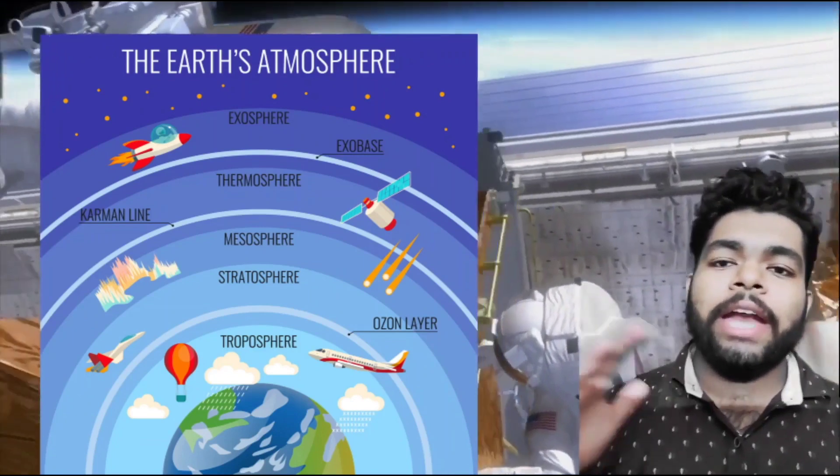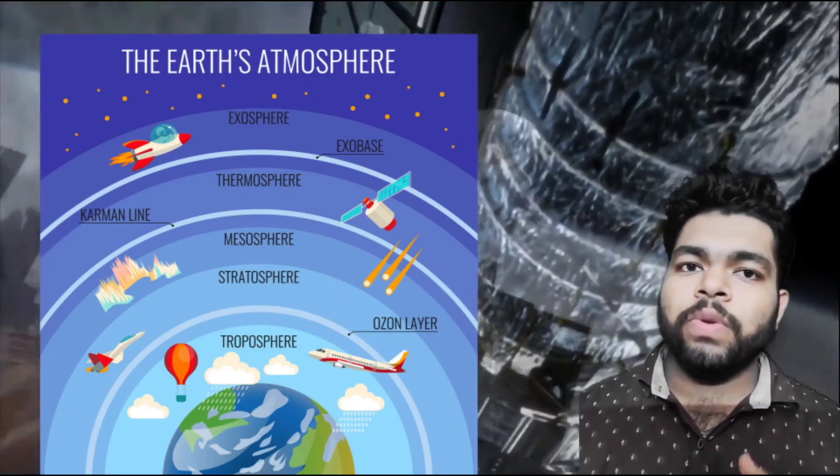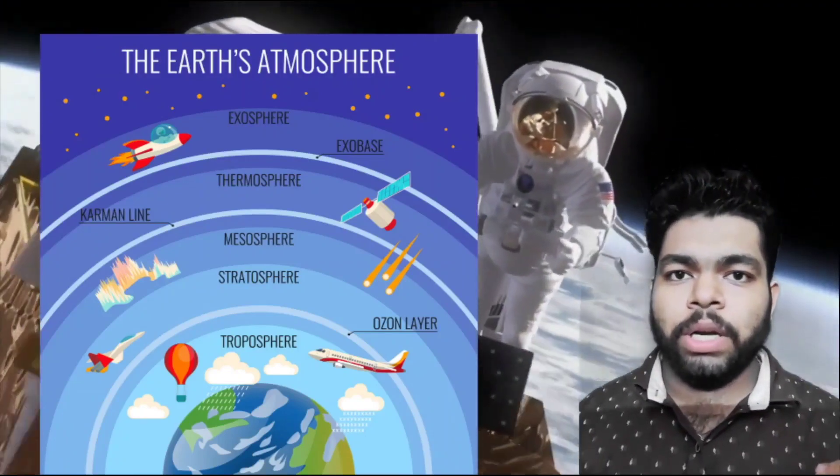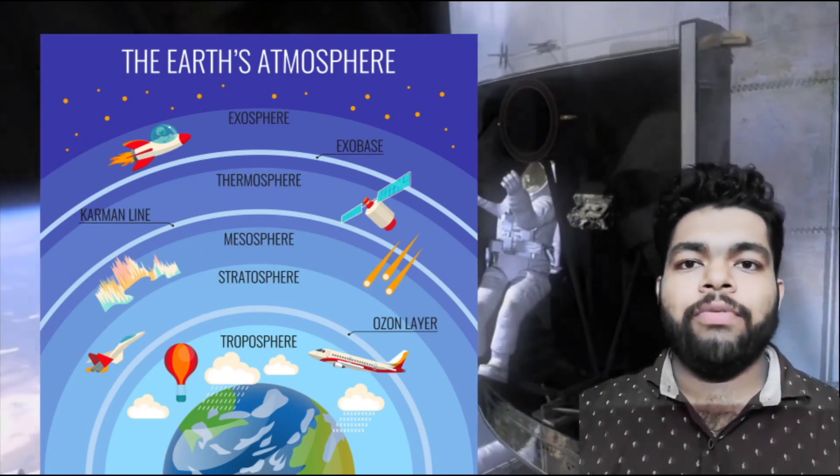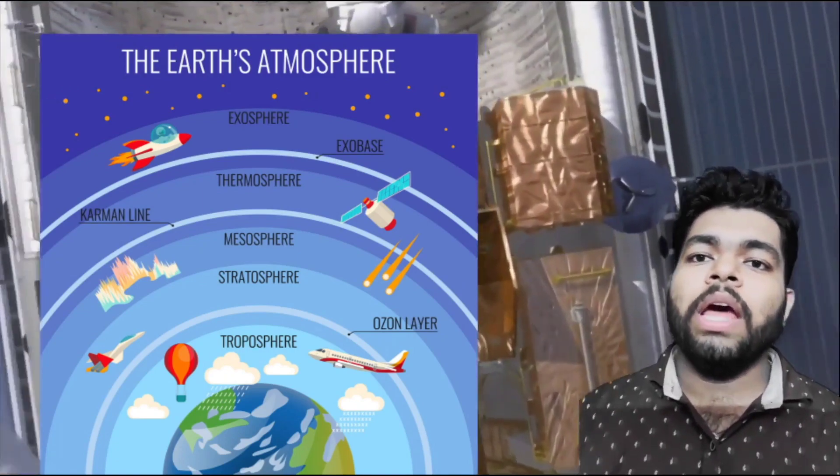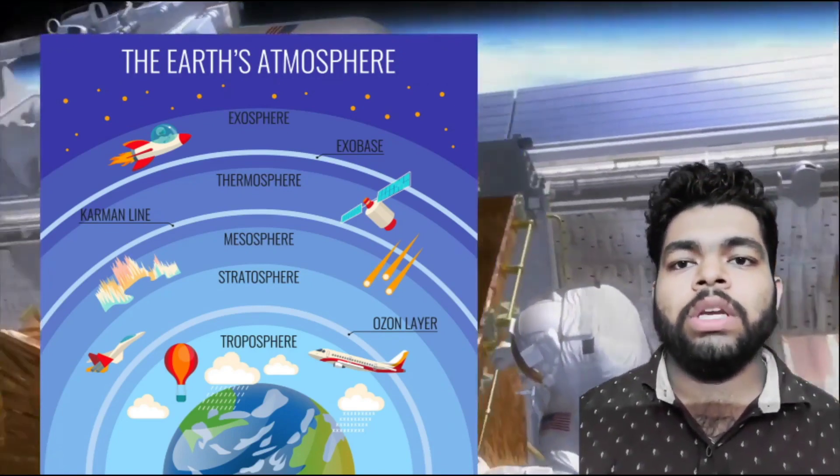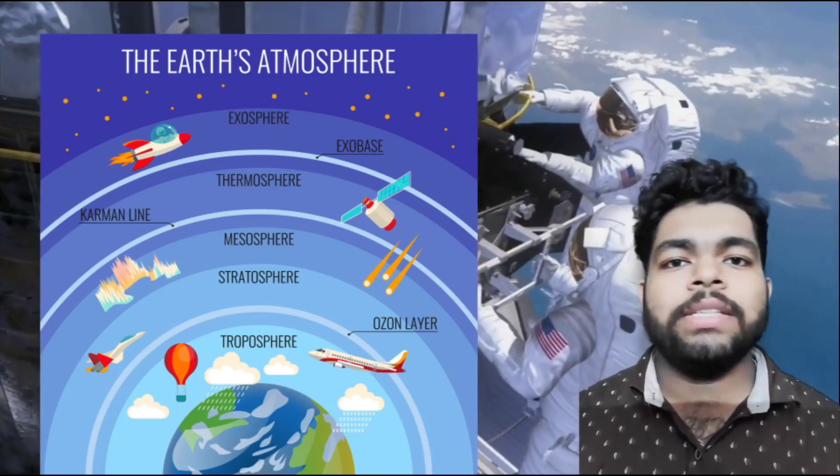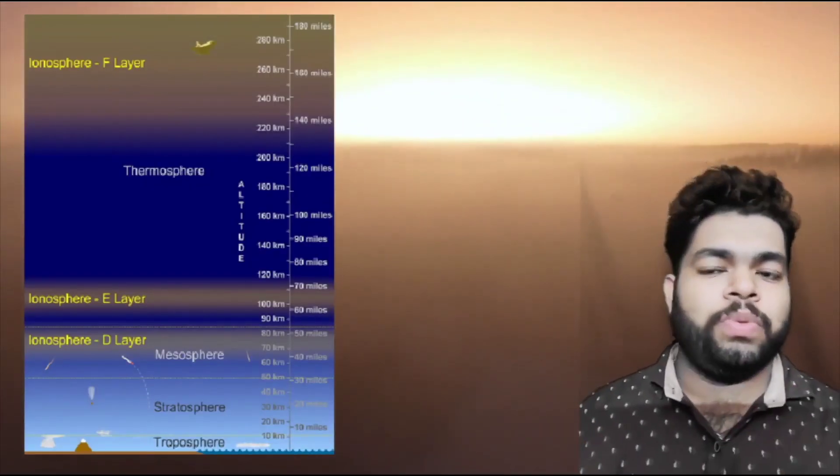The troposphere is from 7 to 20 kilometers, the stratosphere is from 20 to 50 kilometers, mesosphere 50 to 90 kilometers, thermosphere 90 to 500 kilometers, and the exosphere above 4,000 kilometers. These are the basic layers of atmosphere.